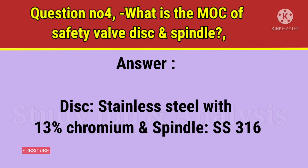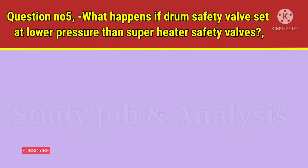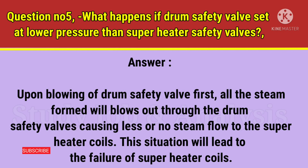Question number 5: What happens if drum safety valves are set at lower pressure than superheater safety valves? Answer: Upon blowing of the drum safety valve first, all the steam formed will blow out through the drum safety valves, causing lesser steam flow to the superheater coils. This situation will lead to failure of the superheater coils.